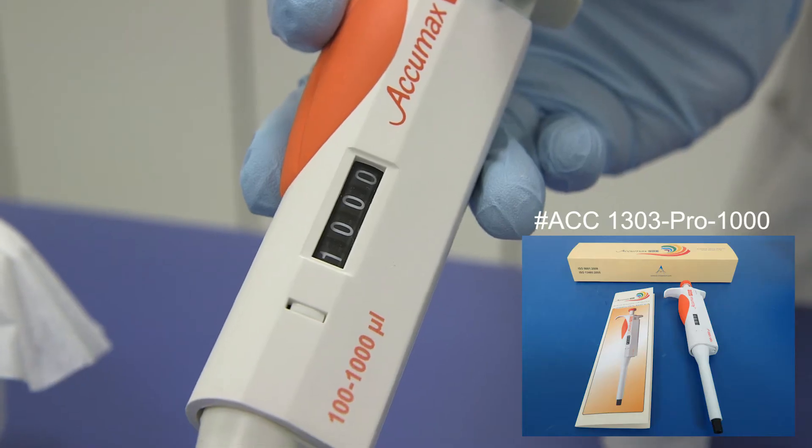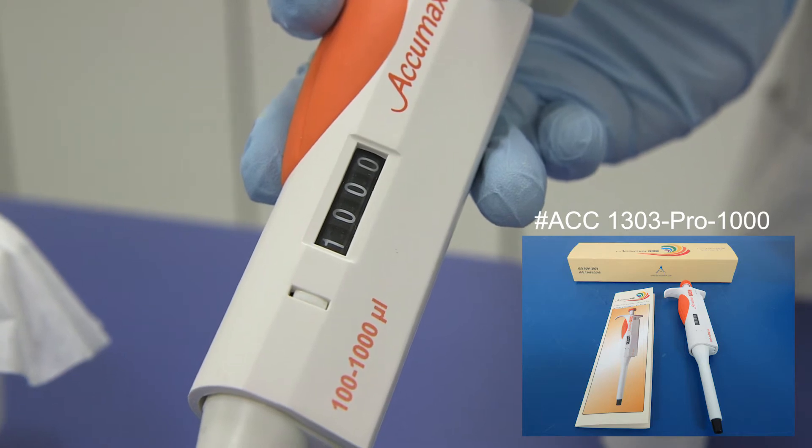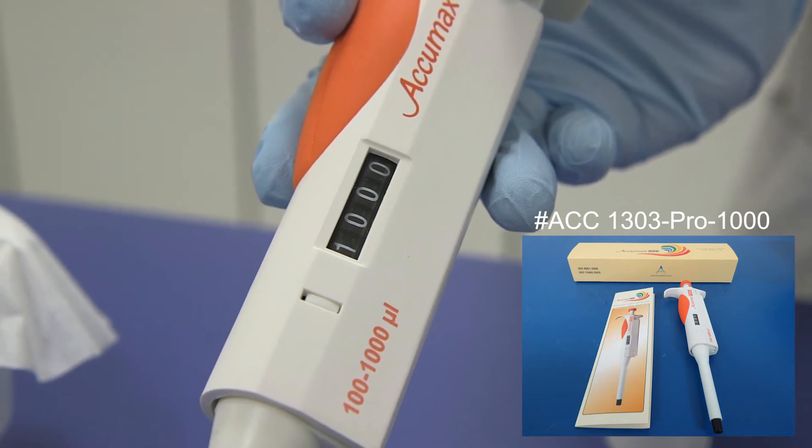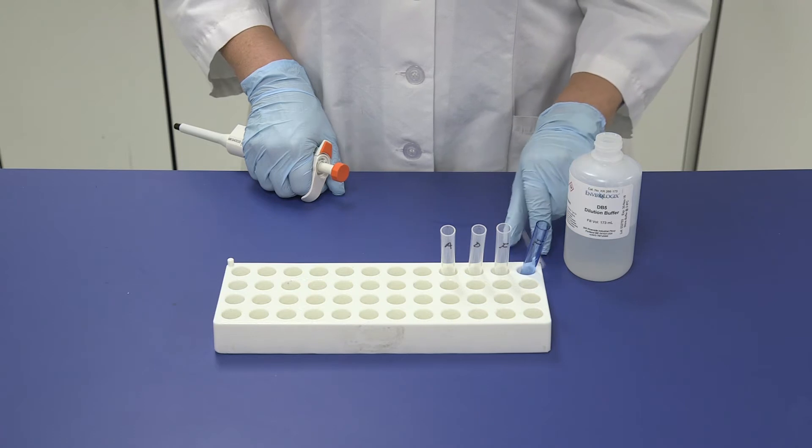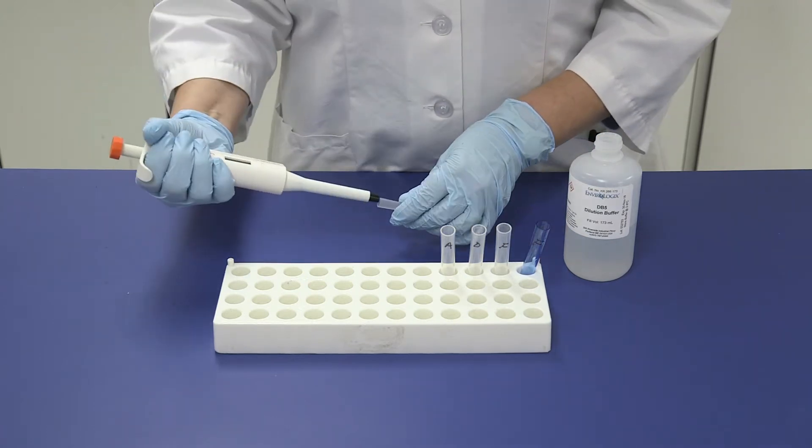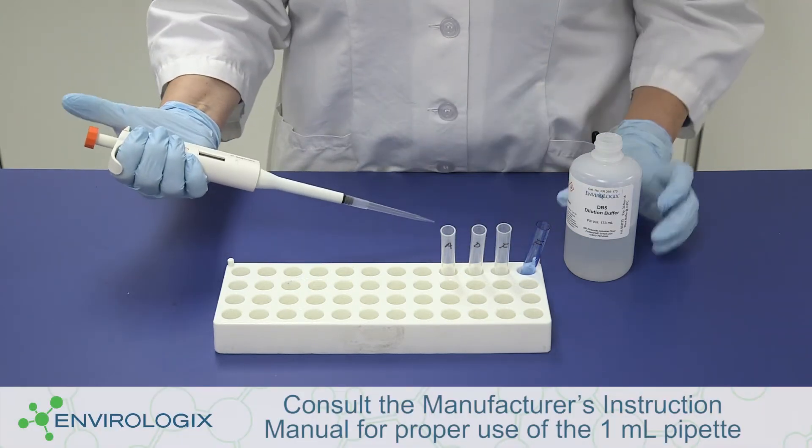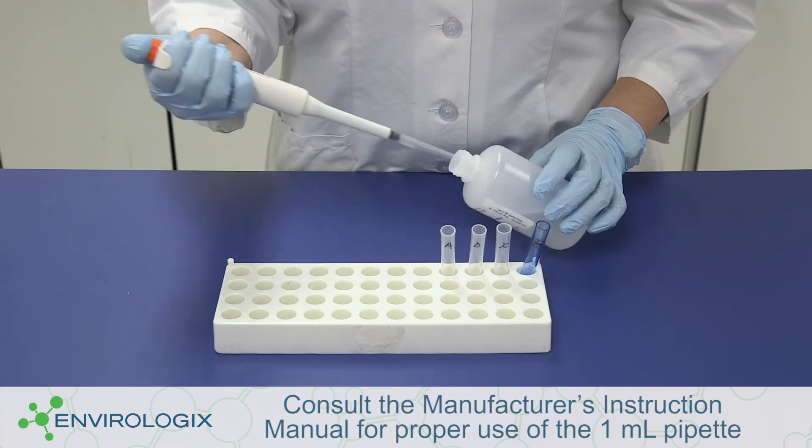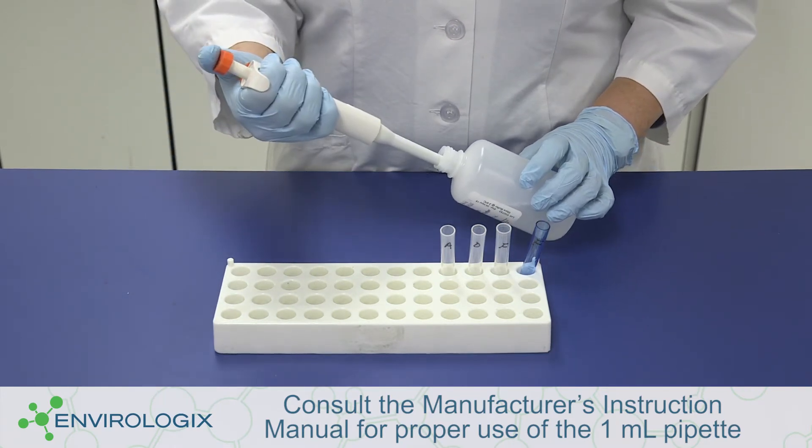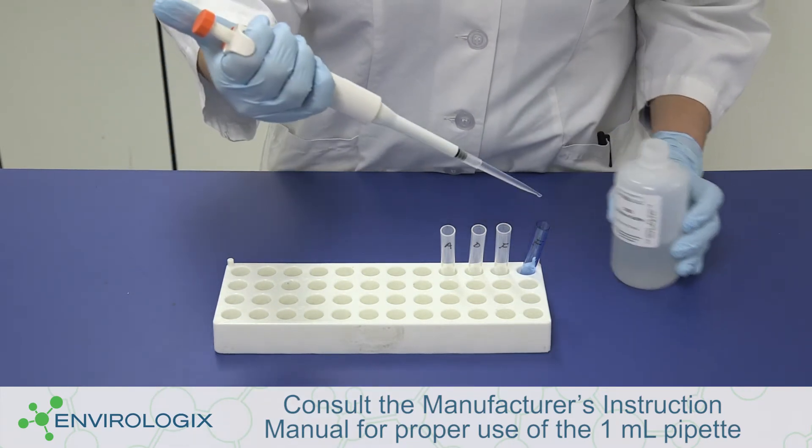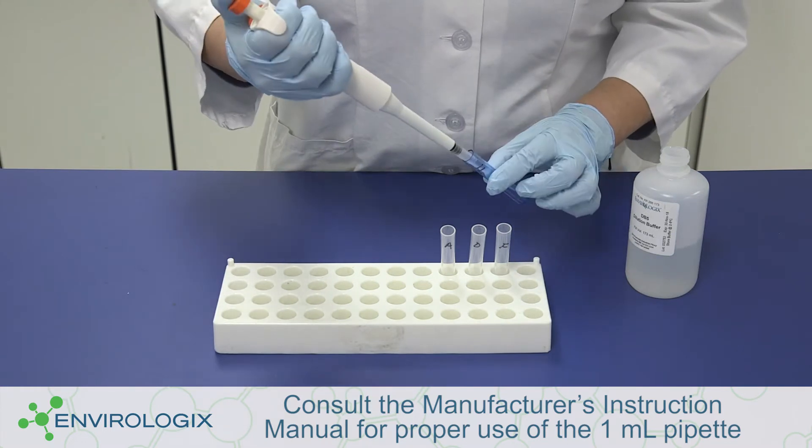Add the required amount of DB5 buffer for each tube, starting with the blue dilution tube labeled F. Place a clean tip on a large pipette set to one milliliter. Add three pipettefuls of DB5 to the blue dilution tube labeled F for a total of three milliliters of DB5.